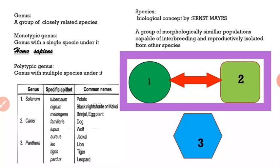Genus can be a monotypic genus or a polytypic genus. A monotypic genus is a genus which has only a single species under it. It may have had many species in the past, but since only a single surviving species is found on Earth today, we call it a monotypic genus. For example, the genus Homo has only one living species under it today, which is sapiens — that is, humans.